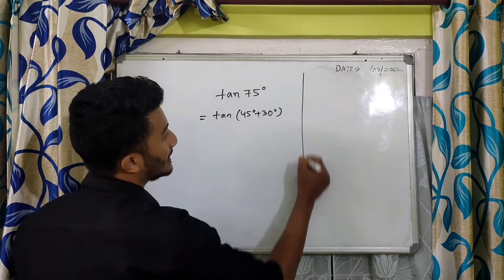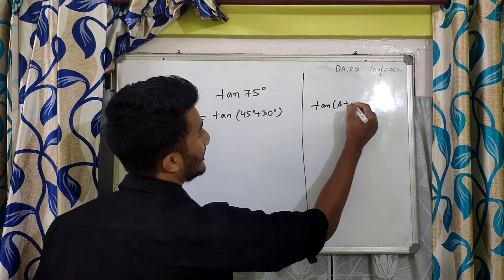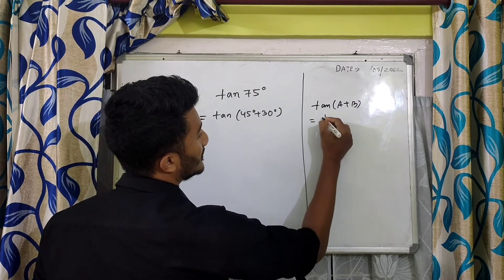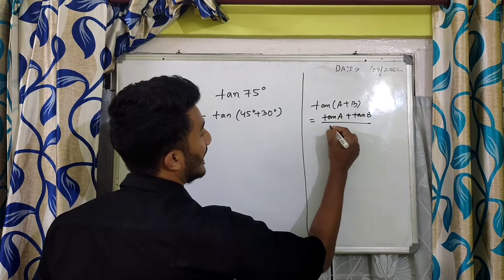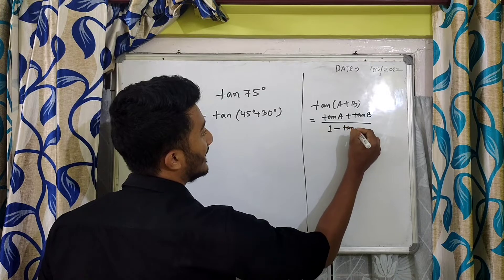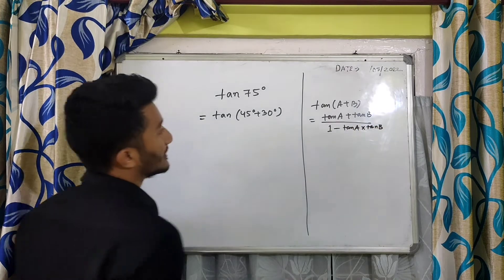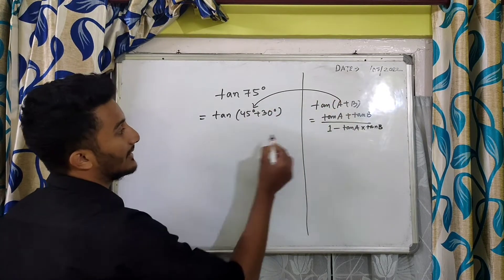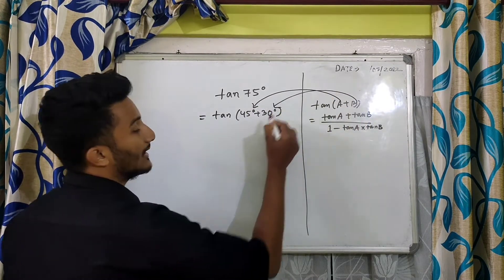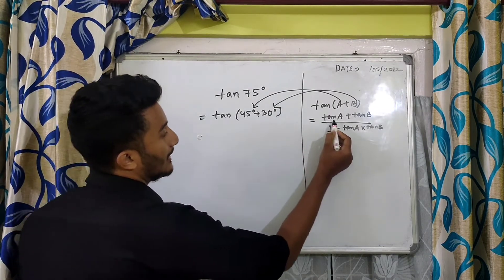So now we need to know one formula: tan(a + b) is equal to tan a plus tan b divided by 1 minus tan a into tan b. Now, in place of a, there is 45 degrees, and in place of b, there is 30 degrees.